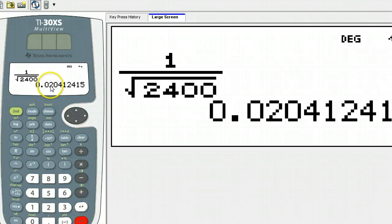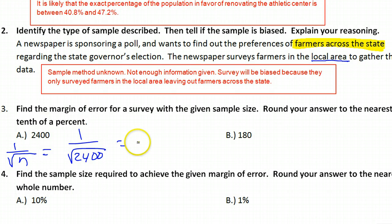That's 0.0204. It's nearest tenth of a percent, so this will become 2.0 percent. That's the answer for number three.